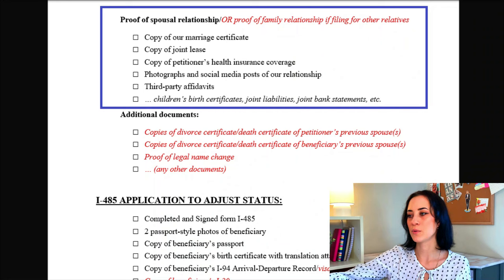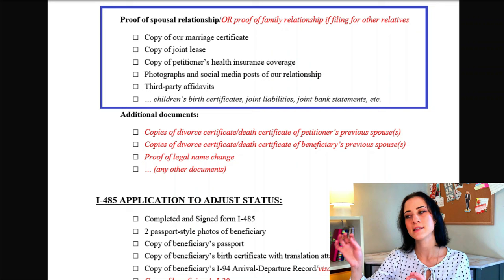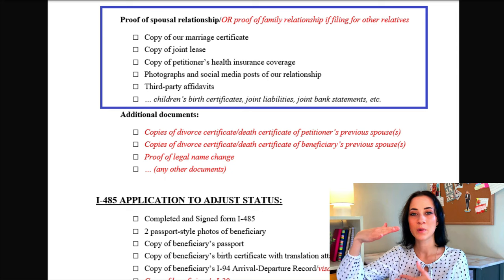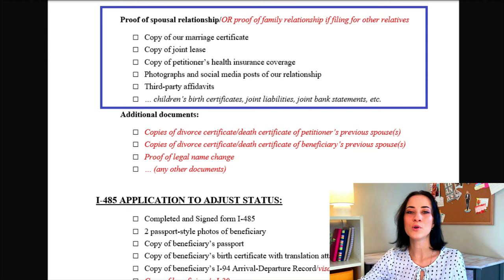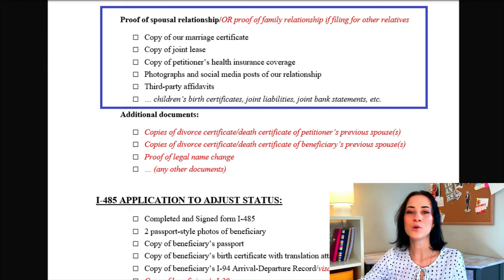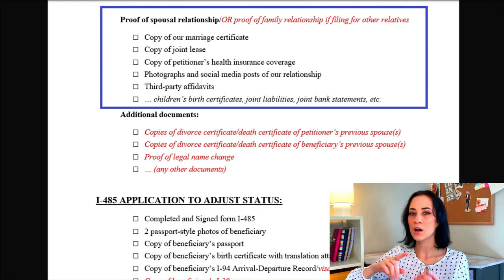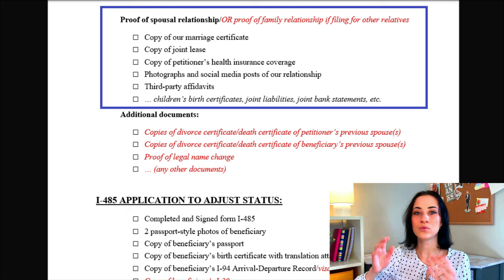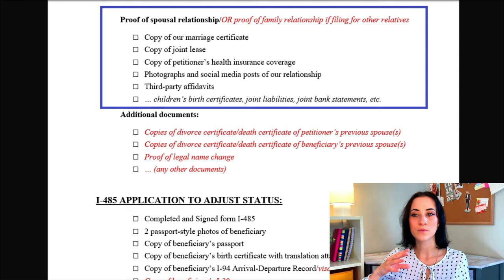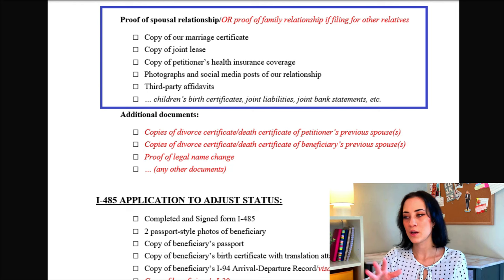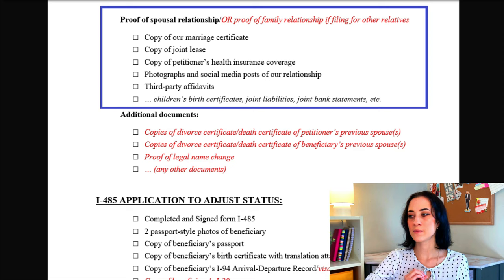Next, you're going to move on to proof of spousal relationship — or proof of family relationship if filing for other relatives. For spousal relationships, this is going to be the biggest part of your I-130 application because you're going to have to prove your bona fide marriage. This is where you would include a copy of your marriage certificate, a joint lease or proof of living together like common bills, health insurance covering each other, photographs of you together, social media posts, third-party affidavits, children's birth certificates, joint bank statements — anything that can prove your bona fide marriage.